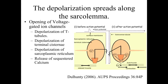That triggers depolarization of the terminal cisternae — part of the triad we discussed in a previous mini-lecture. It causes depolarization of the sarcoplasmic reticulum as a whole. In essence, we trigger the release of calcium. When the depolarization of the muscle membrane spreads down into the T-tubules, it causes depolarization of the sarcoplasmic reticulum, and we release that sequestered calcium.